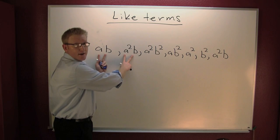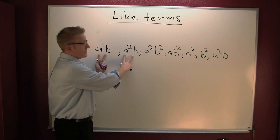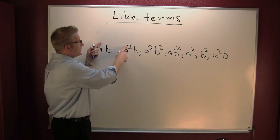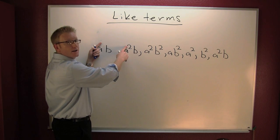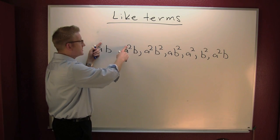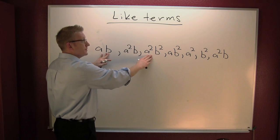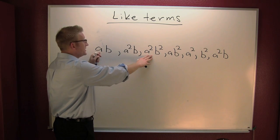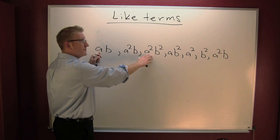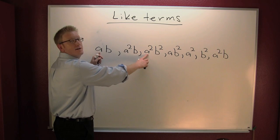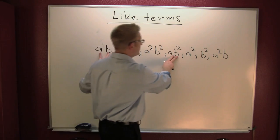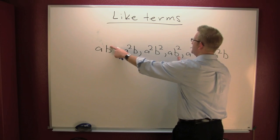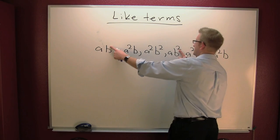Well, they both have the same variables — both have a's and b's — but this one's to the first power and that one's to the second power, so they're not like terms. Looking at the next pair: both have a's and b's, but this one has a to the first and that one has a squared. Those are not like terms. These two? No, because here b's to the first and there b's to the second.